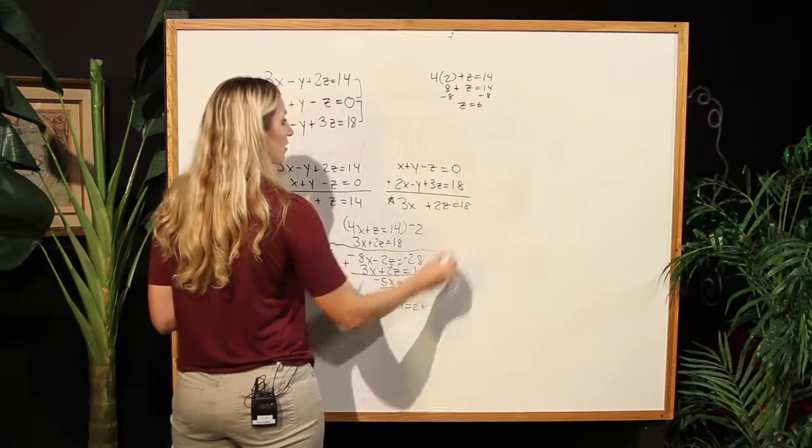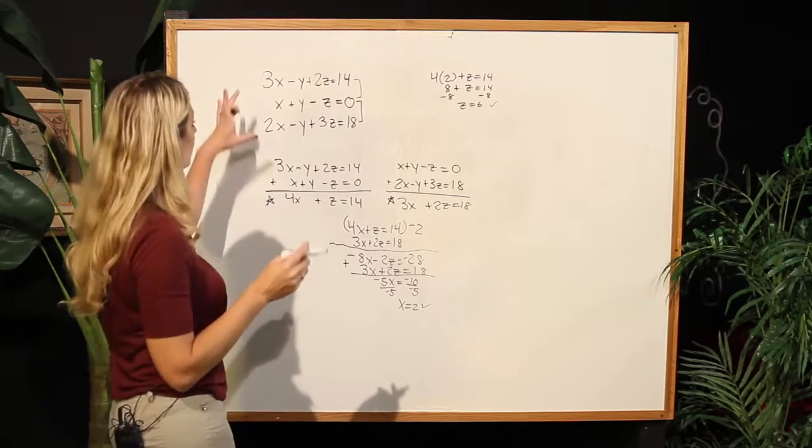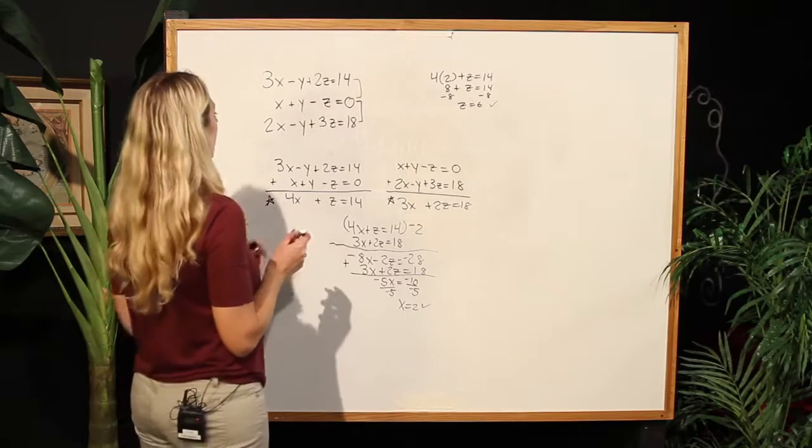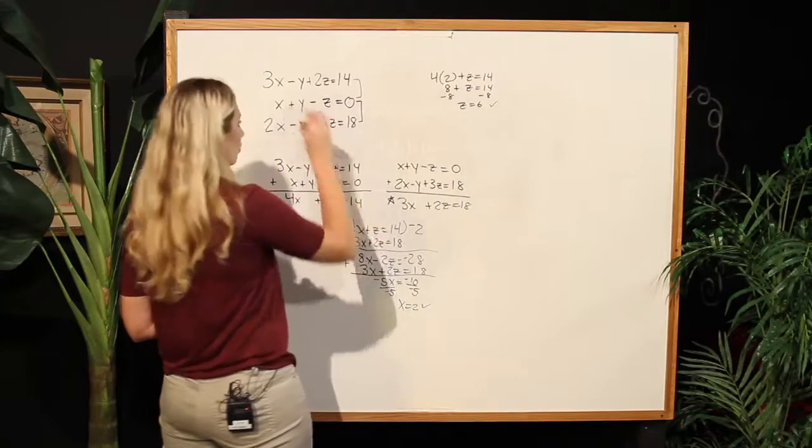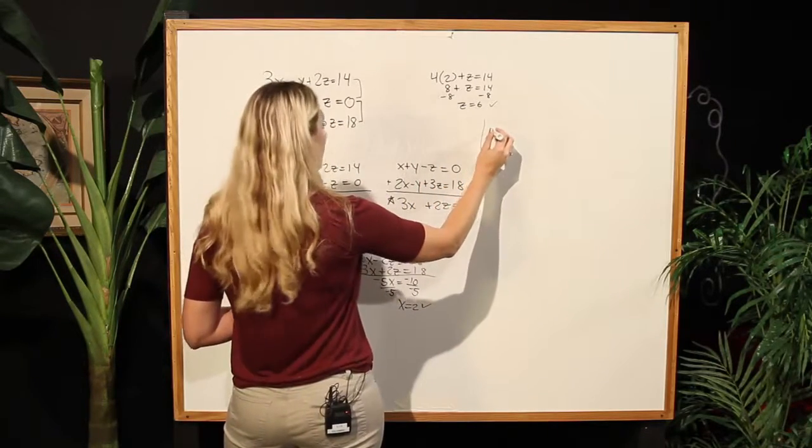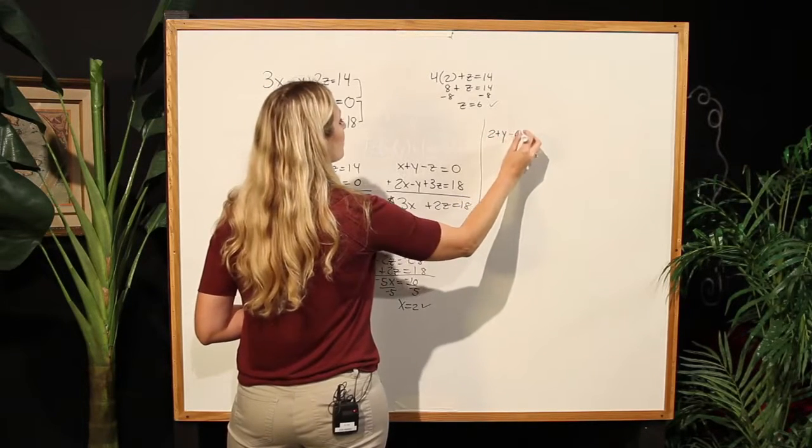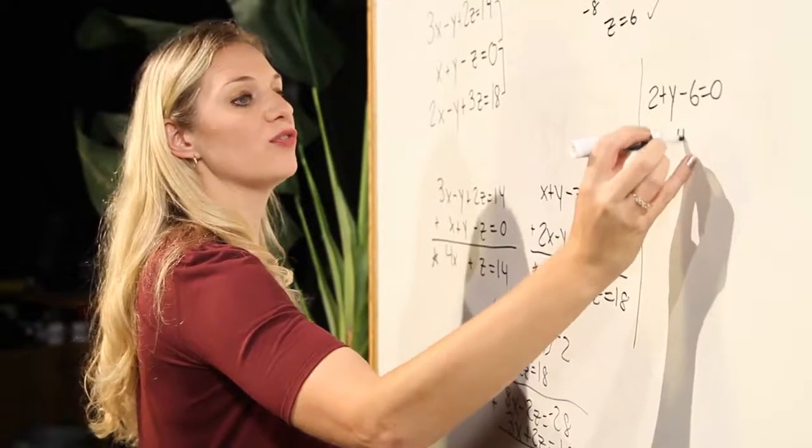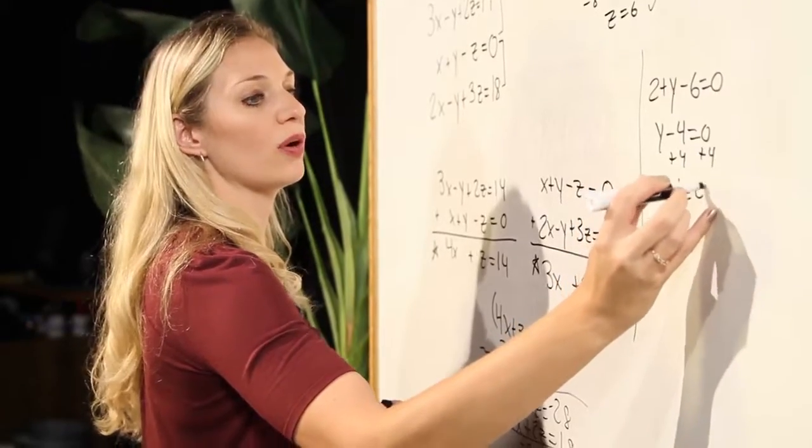I have now an x and a z. All I need left is my y, so I'll plug into one of my original equations to find the y. I'll choose the second one here for ease. Instead of having our original x, what I will have now is 2 plus y minus 6 equaling 0, or y minus 4 equals 0, and adding the 4 to both sides, I get y equals 4.